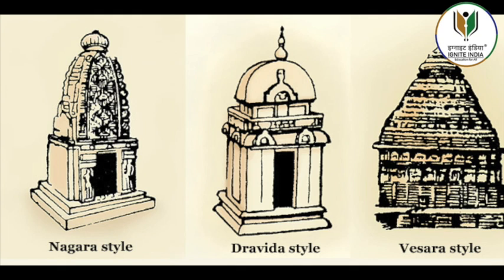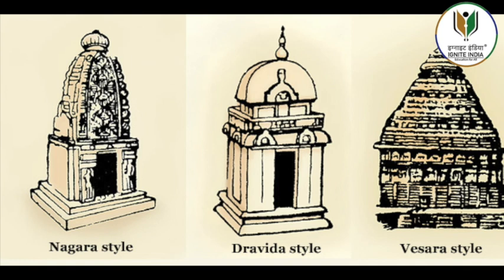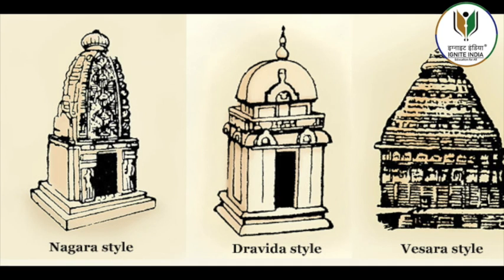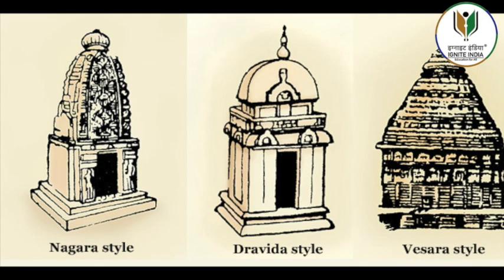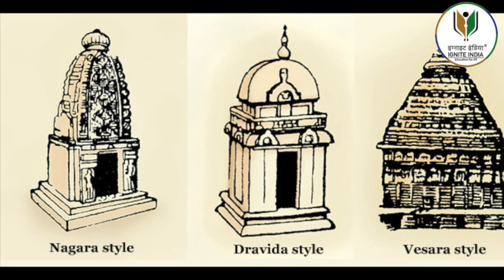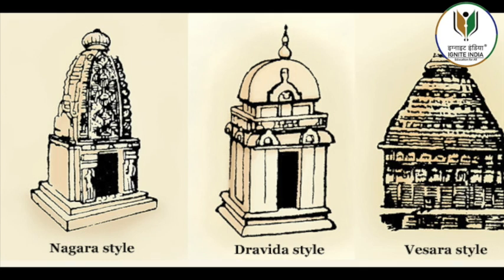The shore temple at Mahabalipuram was built later, probably in the reign of Narasimhavarman II, also known as Rajasimha, who reigned from 700 to 728 CE. The temple houses three shrines — two to Shiva, one facing east and the other west, and a middle one to Vishnu. In the compound there is evidence of a water tank and an early example of a Gopuram, along with several other images.